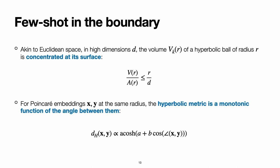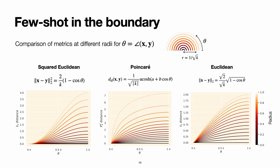And to see this in more detail, consider here a comparison between the squared Euclidean metric, the Poincaré metric, and the Euclidean metric, for embeddings lying at the same radius, ranging from 0 to 1, and having an angle between them theta, ranging from 0 to pi.